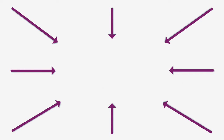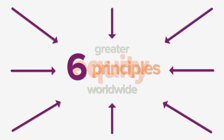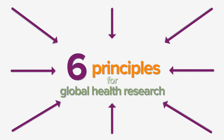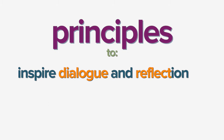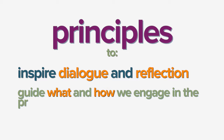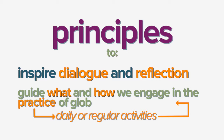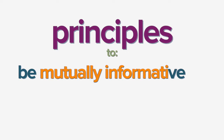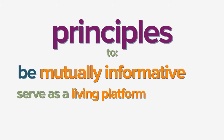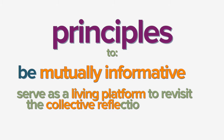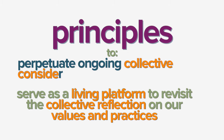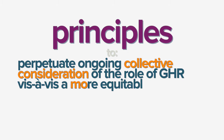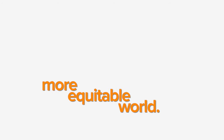With the overarching goal of promoting greater equity worldwide, six principles for global health research evolved from our studies. These principles are intended to inspire dialogue and reflection, guide what and how we engage in the practice that is the daily or regular activities of global health research, to be mutually informative, and to serve as a living platform to revisit the collective reflection on our values and practices, perpetuating ongoing collective consideration of the role of global health research vis-à-vis a more equitable world.